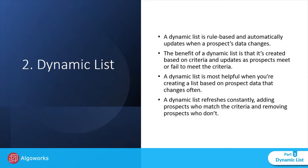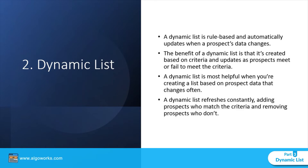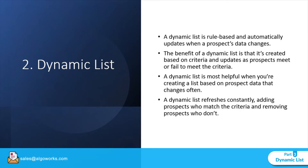A dynamic list is a rule-based list that automatically updates when a prospect's data changes. The benefit of a dynamic list is that it's created based on criteria and updates as a prospect meets or fails to meet the criteria. A dynamic list is most helpful when you are creating a list based on prospect data that changes often, as it refreshes constantly — adding prospects who match the criteria and removing prospects who don't.